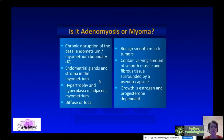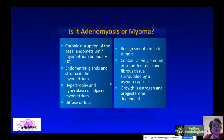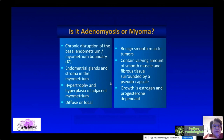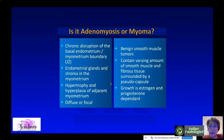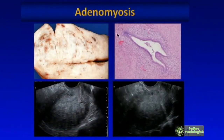In adenomyosis, there is chronic disruption of the basalis endometrium-to-myometrium boundary — the junctional zone — and the endometrial glands and stroma migrate into the myometrium. As these glands bleed cyclically, they cause hypertrophy and hyperplasia of the adjacent myometrium. It can be a diffuse or focal process. By contrast, myomas are benign smooth muscle tumors containing variable amounts of smooth muscle and fibrous tissue, with a pseudocapsule, and their growth is estrogen and progesterone dependent.